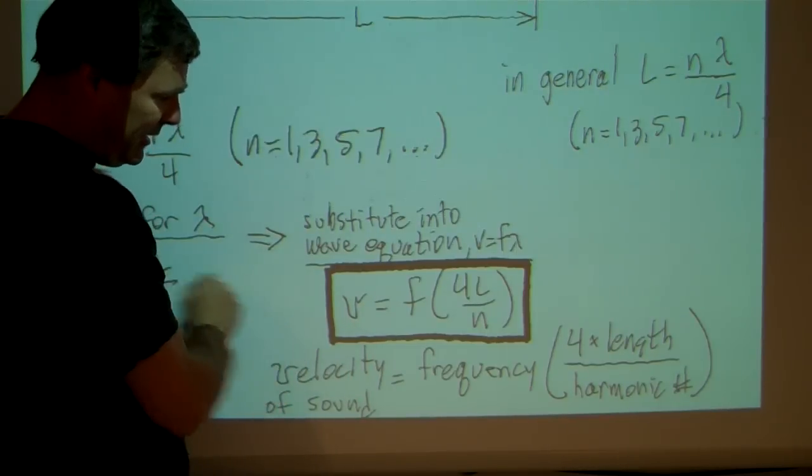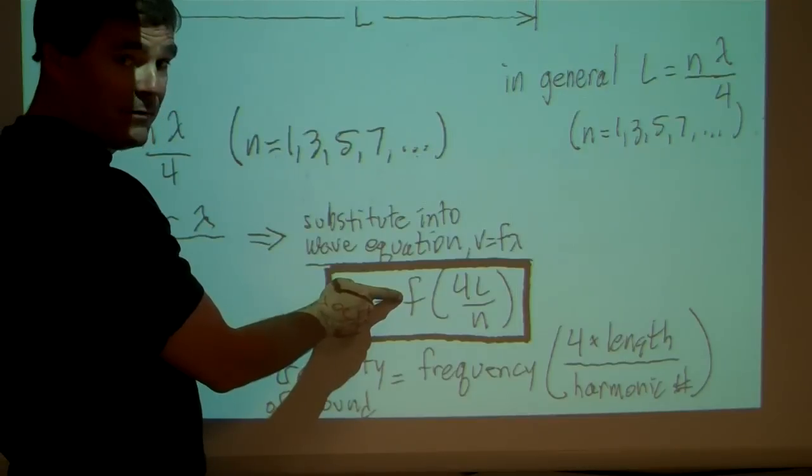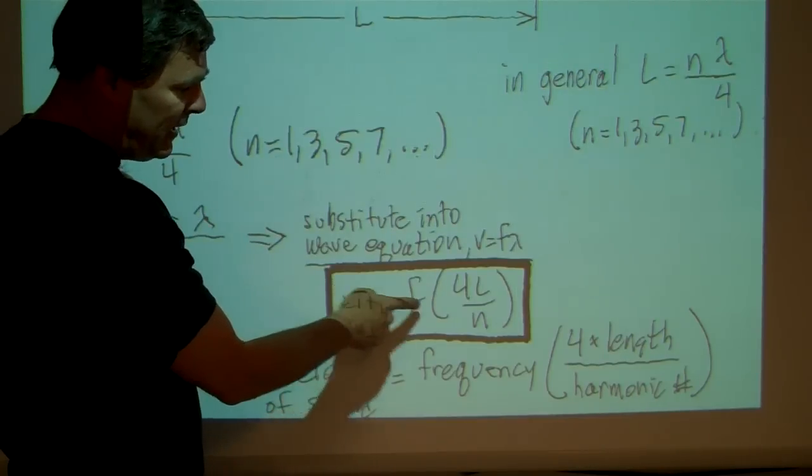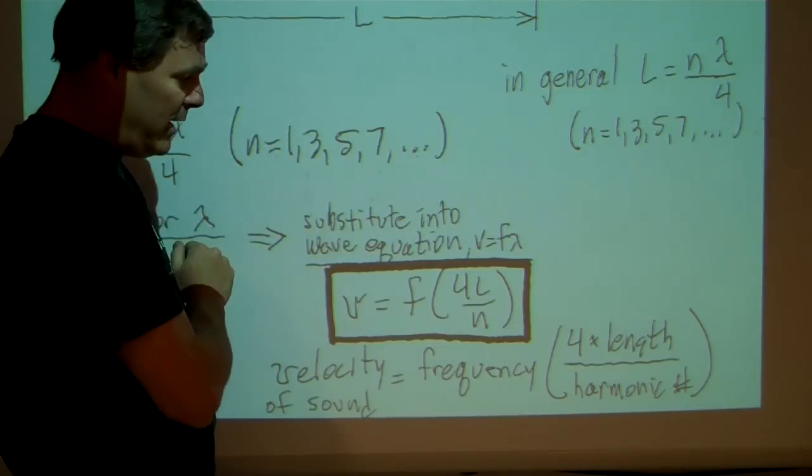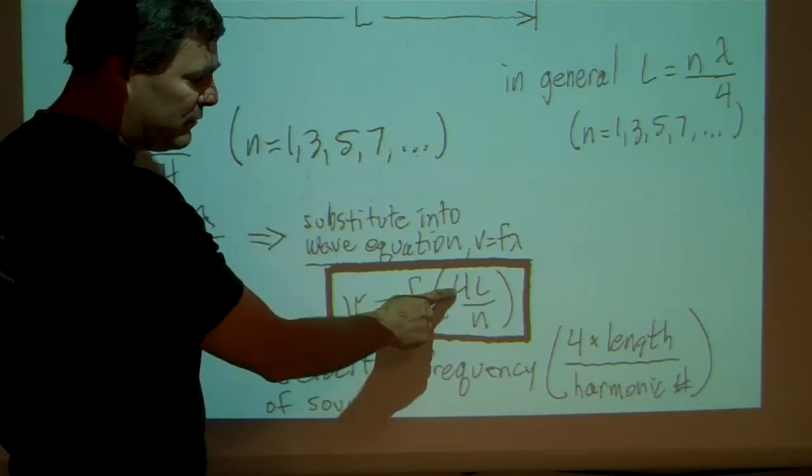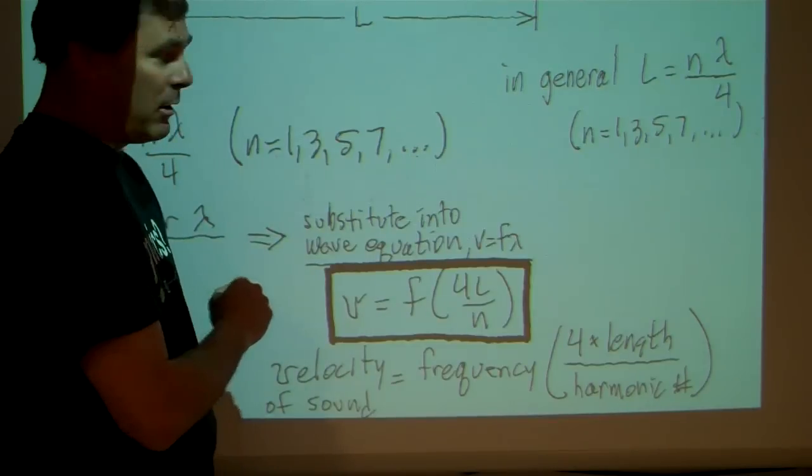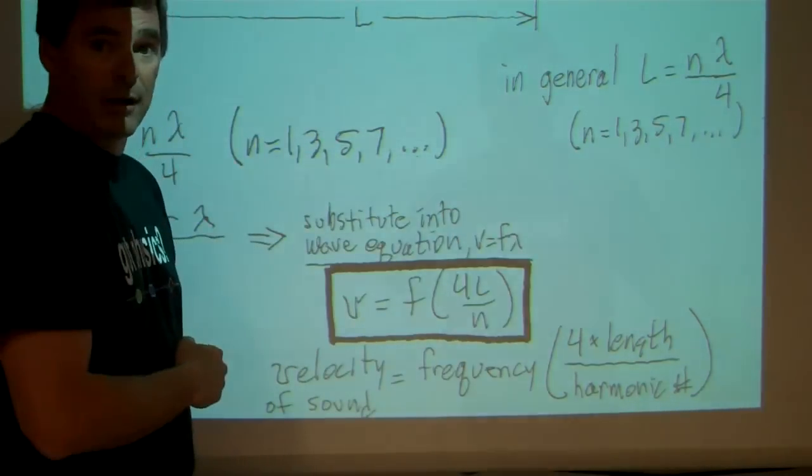The velocity of sound is equal to the frequency of the sound source that I'm using, times four times the length of the tube where I hear a standing wave, an increase in volume, divided by the harmonic number, one, three, five, seven, and so on.